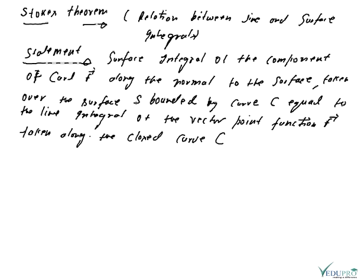Next we have taken the Stokes theorem. Basically it is the relation between the line and surface integrals. Statement: the surface integral of the component of curl F along the normal to the surface, taken over the surface S bounded by the curve C, equals the line integral of the vector point function along the closed curve C. Mathematically: the line integral f·dr equals the surface integral of curl F·n̂ ds.